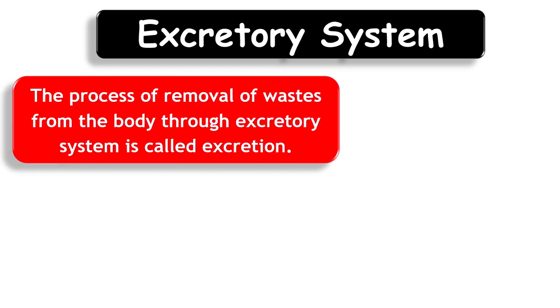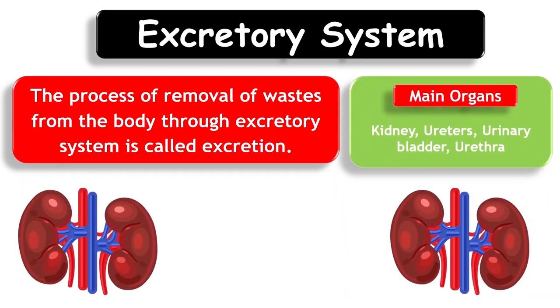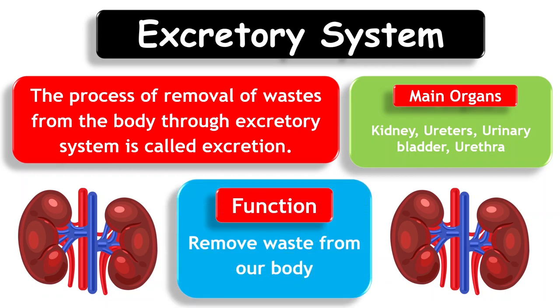Excretory System. The process of removal of waste from the body through the excretory system is called excretion. Main organs: kidney, ureter, urinary bladder, and urethra. Function: It removes waste from our body.